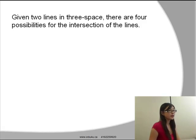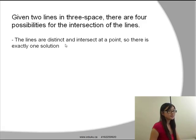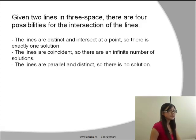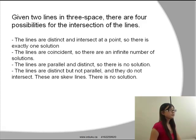Given 2 lines in 3-space, there are 4 possibilities for the intersection of lines. The first one is the lines are distinct and intersect at one specific point, so there is only one solution. The second one is the lines are coincident, so there are infinitely many solutions. The third one is the lines are parallel and distinct, so there is no solution. And the fourth one is the lines are distinct but not parallel and they do not intersect. These are skew lines and there is no solution.